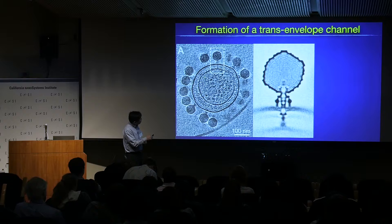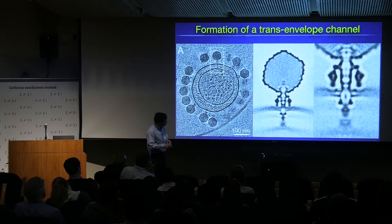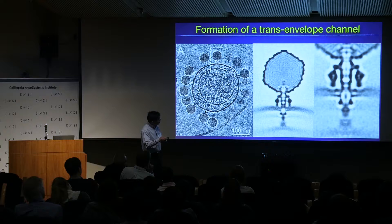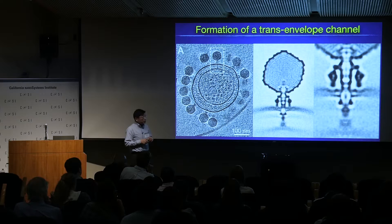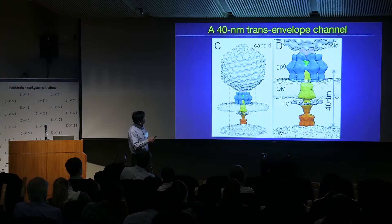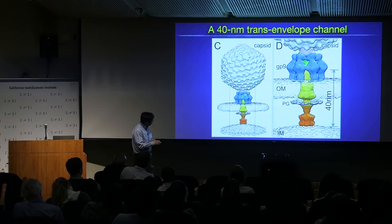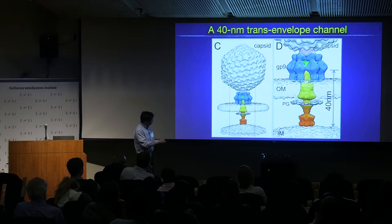After this absorption stage, P22 starts to form a channel. This channel was barely visible in the original tomogram, but by averaging you can see a channel formed between the outer membrane and inner membrane. Zooming in, you can see the outer membrane bilayer plus a so-called membrane pore. The channel starts from the outer membrane, forming a large membrane pore, and DNA can be seen threading through to ultimately cross the outer membrane. This gives the first impression of how an almost 40-nanometer trans-envelope channel was formed.